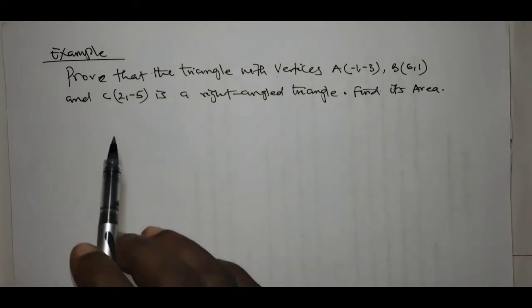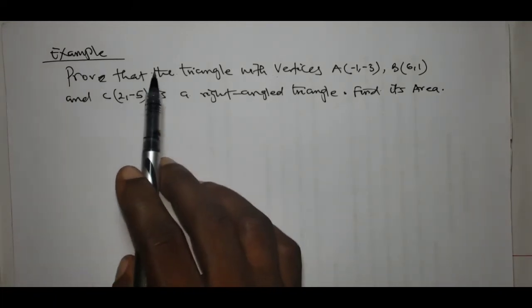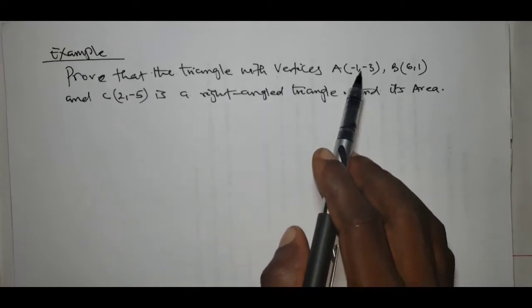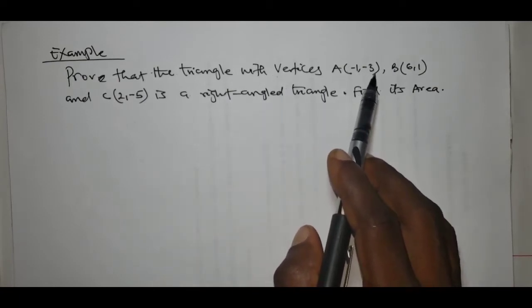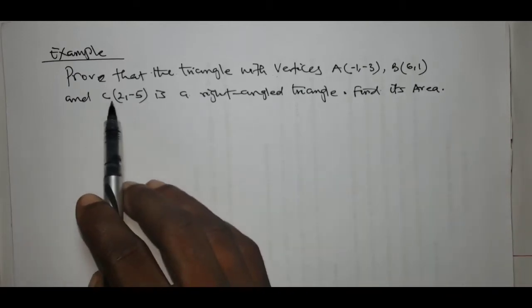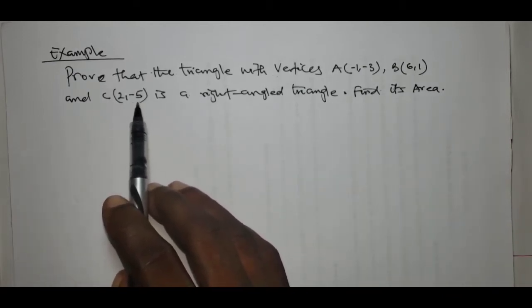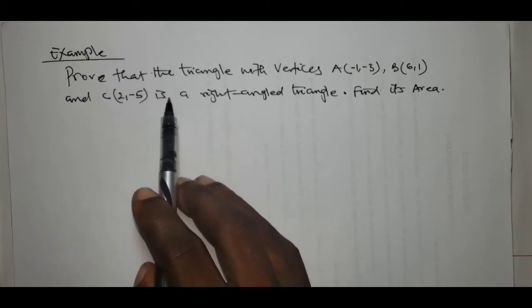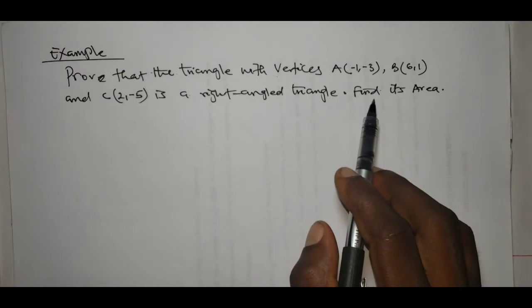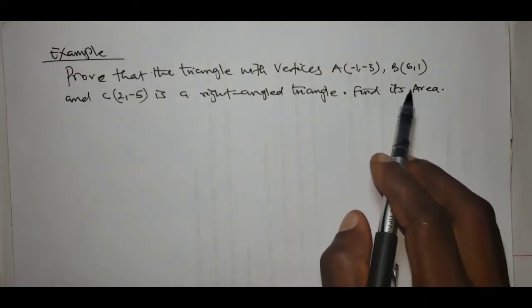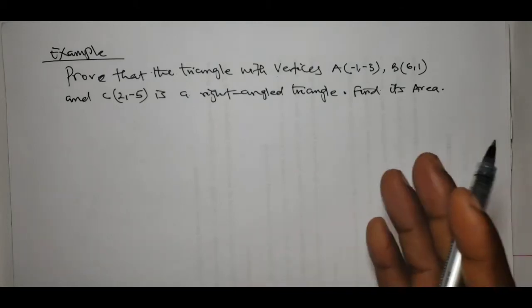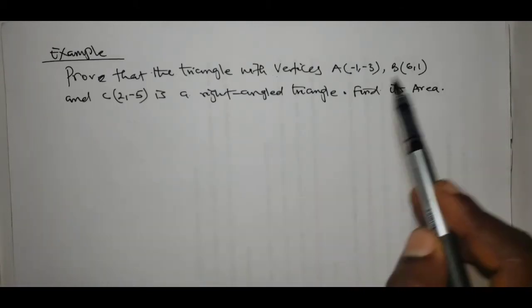The next question says: prove that the triangle with vertices A(-1, -3), B(6, 1), and C(2, -5) is a right-angled triangle. After that, we are also asked to find its area. So we want to use the concept of distance between two points on the plane to answer this question.